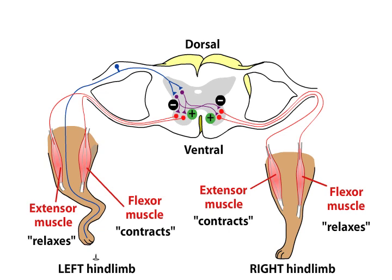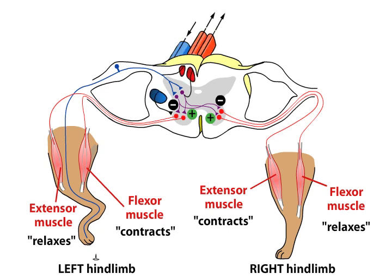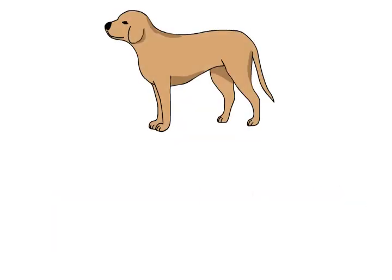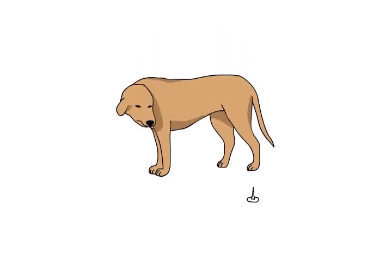The sensory information is also relayed up the spinal cord to the brain, where it can be further processed. Ultimately, signals from the brain travel back along motor pathways down the spinal cord and can thus modify the actions of the spinal circuits. The information from higher nervous centers permits fine-tuning of muscular control and also allows the dog to avoid painful stimuli in future encounters.